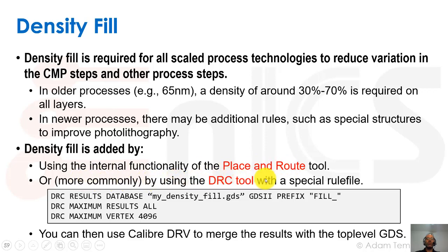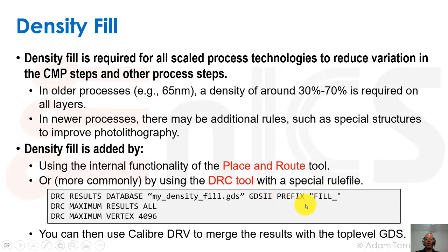The place and route tool has some density fill options, but they run on the LEF flow rather than a careful sign-off flow, so they don't usually fix everything. The more common approach is to use the DRC tool: we take the same DRC tool, provide a special rule file, and use the DRC results database option to output a GDS file. The rule file tells it how to perform density fill. Then we use Calibre DRV, as with the logos, to merge the density fill results with the top-level GDS.